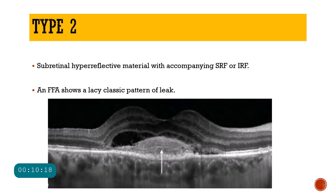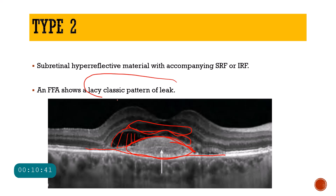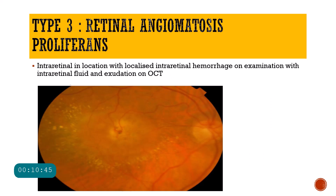Next we have the Type 2 CNVM. On OCT you can see the RPE located here, and a hyper-reflected mass present above the RPE, associated with subretinal fluid and some amount of intraretinal fluid. This is the Type 2 variety of CNVM, and on FFA — that is fundus fluorescein angiography — it will show a classic pattern of leakage.